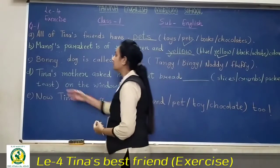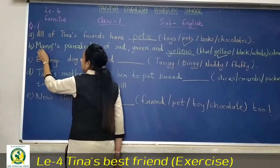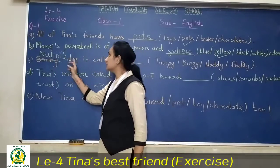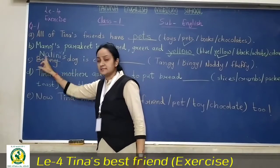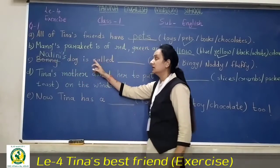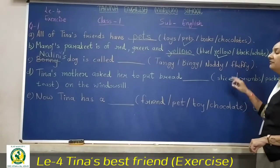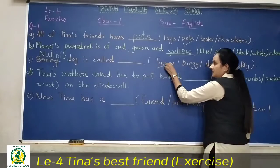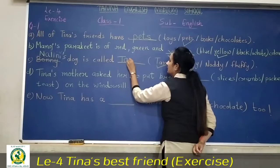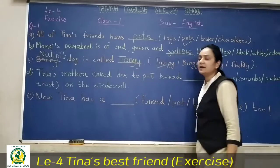Now see, third one. Yahape Boni likha hai, you have to cancel this. Boni ke upar aapko Nalini likha hai. So you have to write here: Nalini's dog. Nalini aapko likhna hai, Boni aapko cancel karna hai. So Nalini's dog is called... Tengi, Bindi, Nodi, or Fluffy? It was Tangy. So write here Tangy. T-A-N-G-Y.